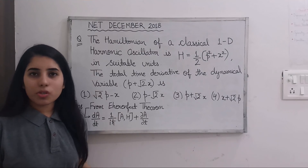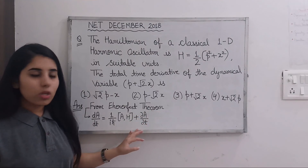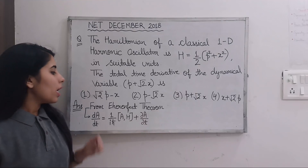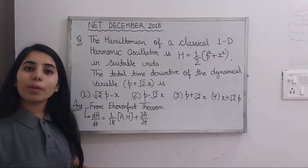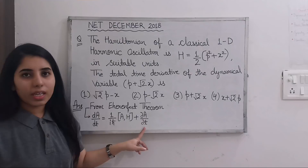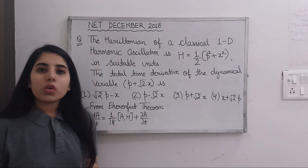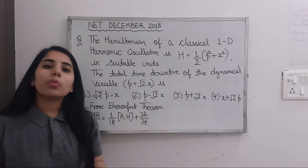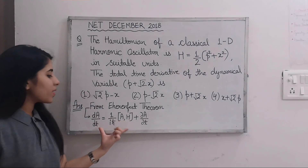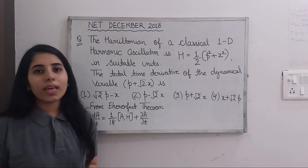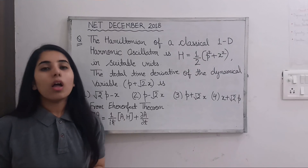By solving this particular expression or equation, you will easily be able to get the answer for this question. The partial derivative ∂A/∂t — since there is no explicit time factor in this variable — will vanish. So we just need to solve the commutator bracket of A with H.